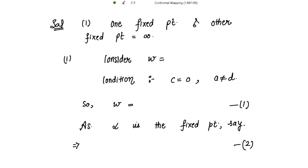Recall the quadratic equation in z: Cz² + (d − a)z − b = 0. For this quadratic equation we can get the conditions for two fixed points — one finite and one infinite — as C = 0 and a ≠ d. You can check the previous content about fixed points of bilinear transformation for details. So for two fixed points, one finite and one infinite, the condition is C = 0 and a ≠ d, for the bilinear transformation w = (az + b)/(Cz + d).